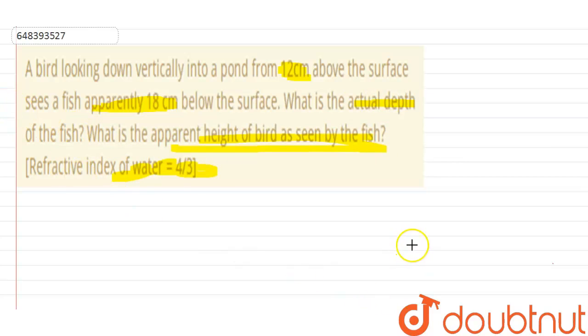First of all, let's construct a figure. Suppose this is my water surface and there's a bird just like here. This is my distance at which the bird is, that is 12 centimeters from the surface. And there is a fish, and the apparent depth is being given to me.